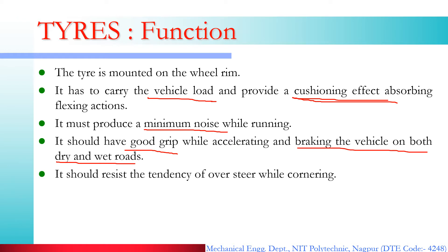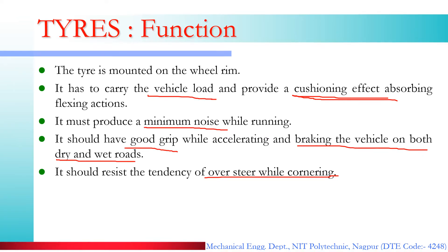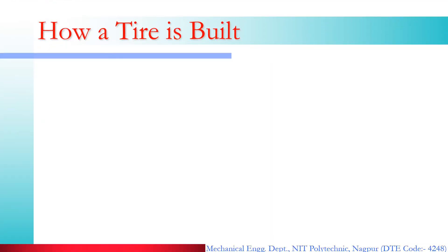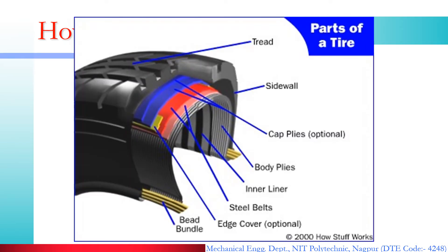The tire should produce minimum noise when your vehicle is running. It should provide a good grip while accelerating and braking the vehicle on both wet and dry roads. Any type of road — wet or dry — tire grip is important. The tire should resist the tendency of oversteering when you are cornering or turning the vehicle. The tire is a very important component of the vehicle.